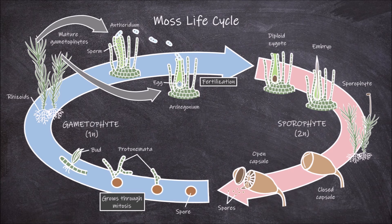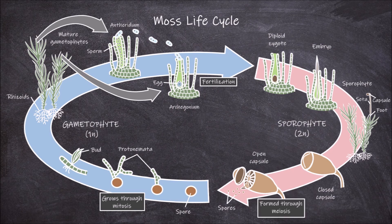The mature sporophyte consists of three parts: the foot, which anchors the sporophyte to the gametophyte; the seta, which is a long stalk; and the capsule, also called the sporangium, which is pod-like and found at the end of the seta. Inside the capsule, haploid spores are created through the process of meiosis. These spores are then released and the cycle continues.